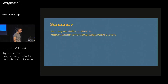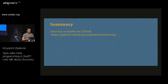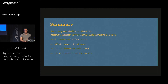Sorcery is available on GitHub. It already has 40 contributors and 40 releases, with three core contributors with write access — so it's not relying on just me. It's already used in 7,000 applications, and last week 500 new apps adopted it. It allows you to eliminate boilerplate, write code once, test it once, limit human mistakes, and ease maintenance costs — and it encourages better architecture choices.